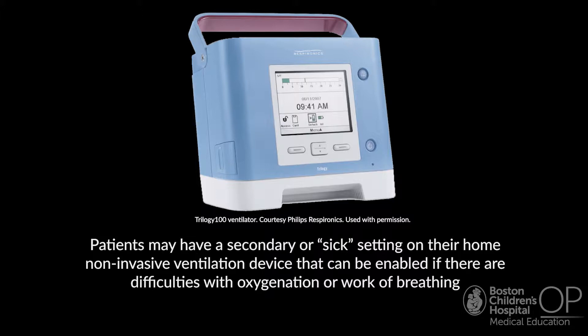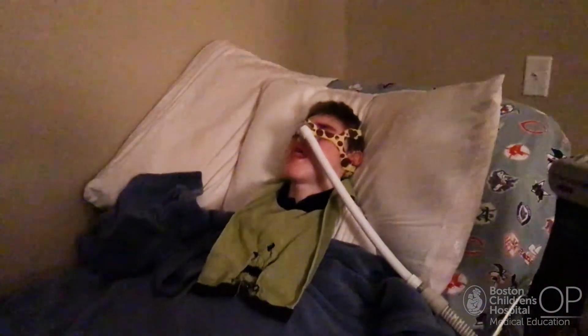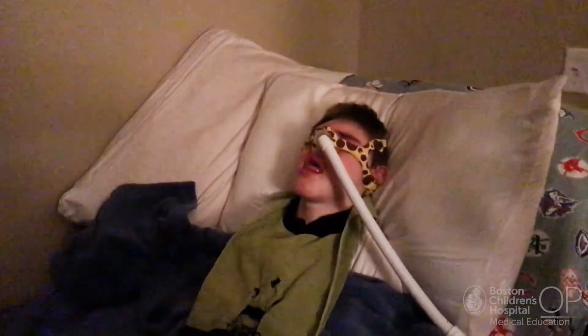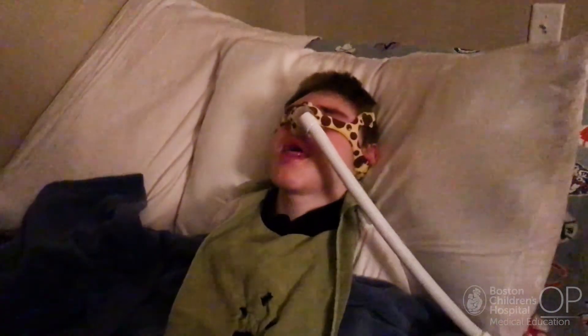Jack has restrictive lung disease and hypoventilation. He uses BiPAP at night. One of the biggest problems is Jack has a very small head. With the profound brain damage, he's in a category called microcephaly, so he has a really small head. Masks don't fit his head, and we don't get a good seal. He's on BiPAP and he's also a mouth breather, so trying to close the chin in there — he just bubbles and bubbles.